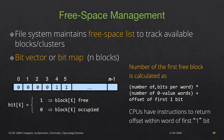All we do is find out the number of bits per word, which is 8. A group of 8 bits is called a word. So the number of bits per word is 8, multiplied by the number of 0-value words — a 0-valued word has all 8 bits set to 0. We then add the offset of the first 1 bit.